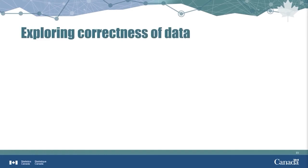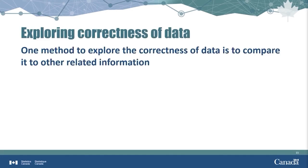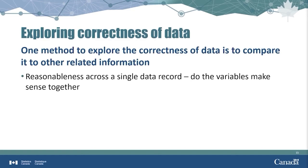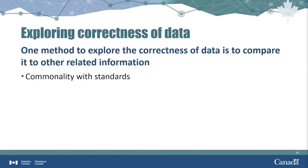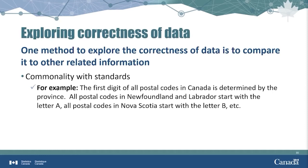One method to explore the correctness of data is to compare it to other related information. We could look at the reasonableness of values across a single data record — are there variables that should make sense together? For example, if there are a total and the parts that make up that total, is the sum correct? Another example is to look at a person's current age and compare that to the highest level of education attained, or marital status, or employment status — does it make sense? We could also look for commonality with standards. For example, in Canada, the first letter of the postal code is determined by which province the address is in. All postal codes in Newfoundland and Labrador start with A, all postal codes in Nova Scotia start with B, and so on. If this is not the case, then one of the pieces of information is incorrect.